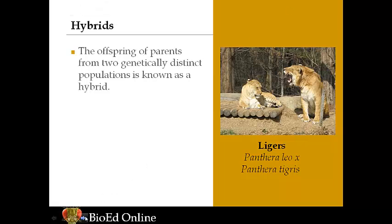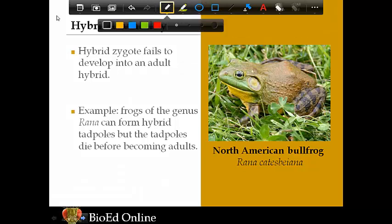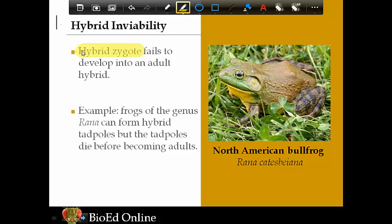The first example of a postzygotic barrier is hybrid inviability — if something is inviable, that means it cannot survive. The hybrid zygote, the result of fertilization, does not develop into an adult. That original fusing takes place but the adult does not fully develop. For example, different frog species of the genus Rana — such as the leopard frog Rana pipiens — can form hybrid tadpoles with other Rana species like the bullfrog. But those tadpoles die before becoming adults, so they are not viable.